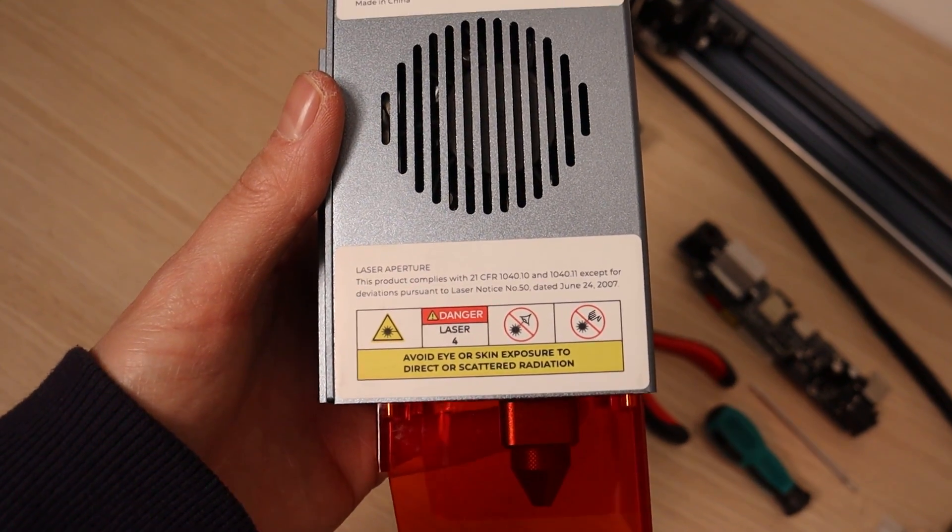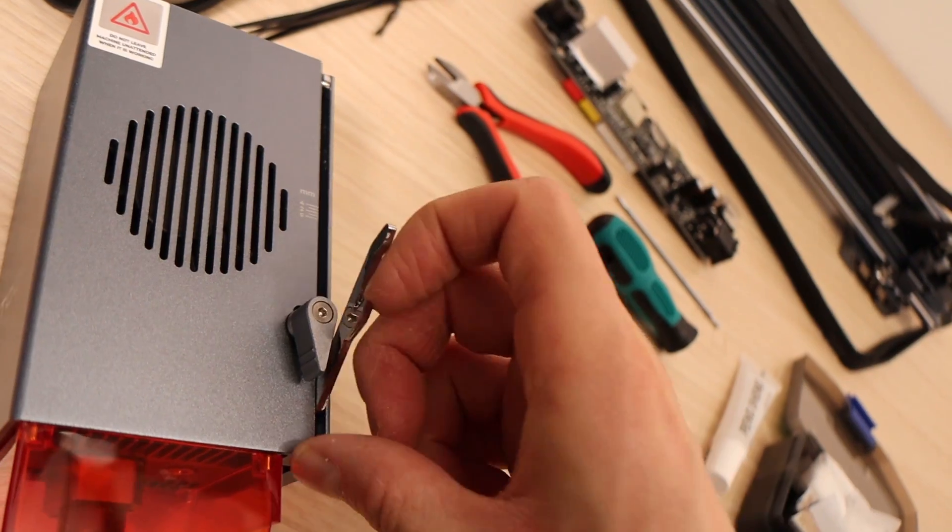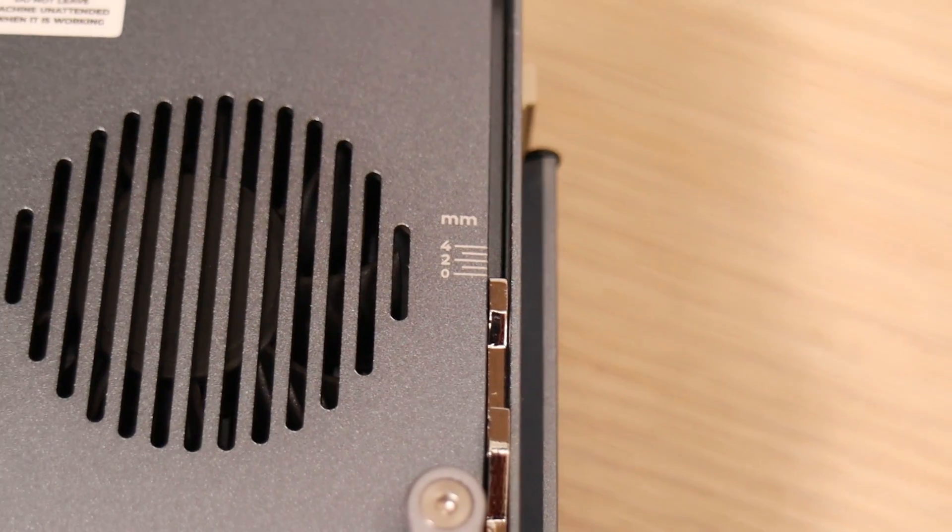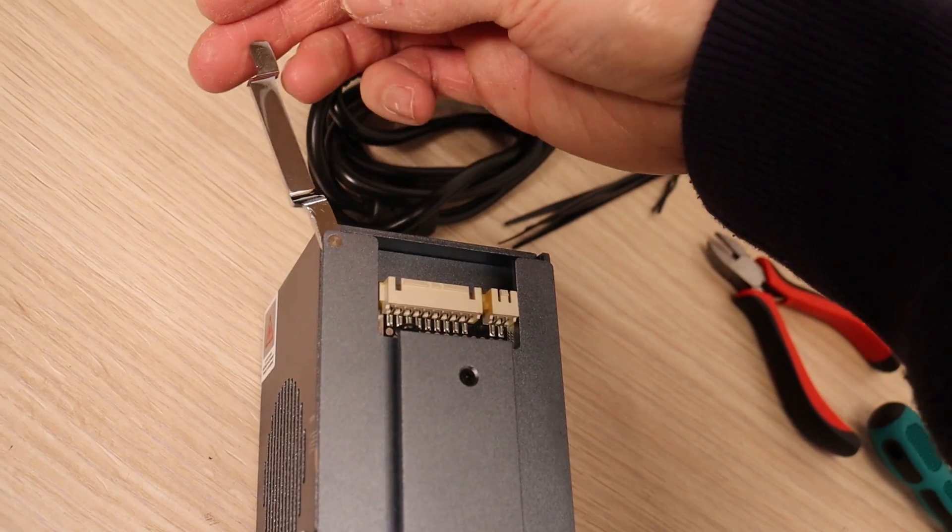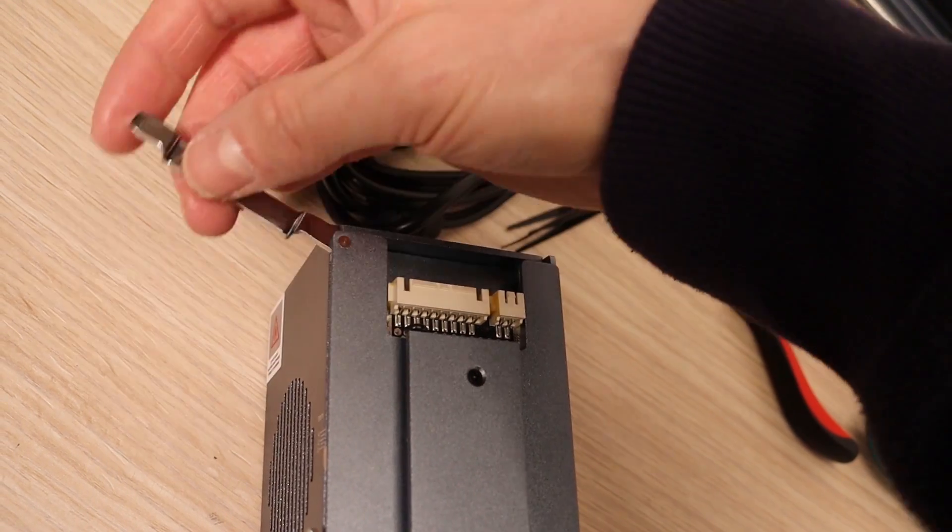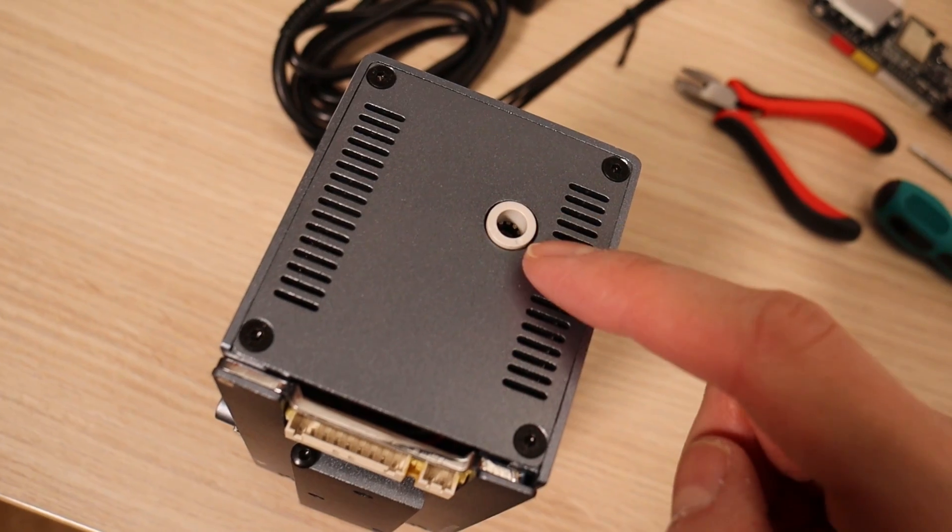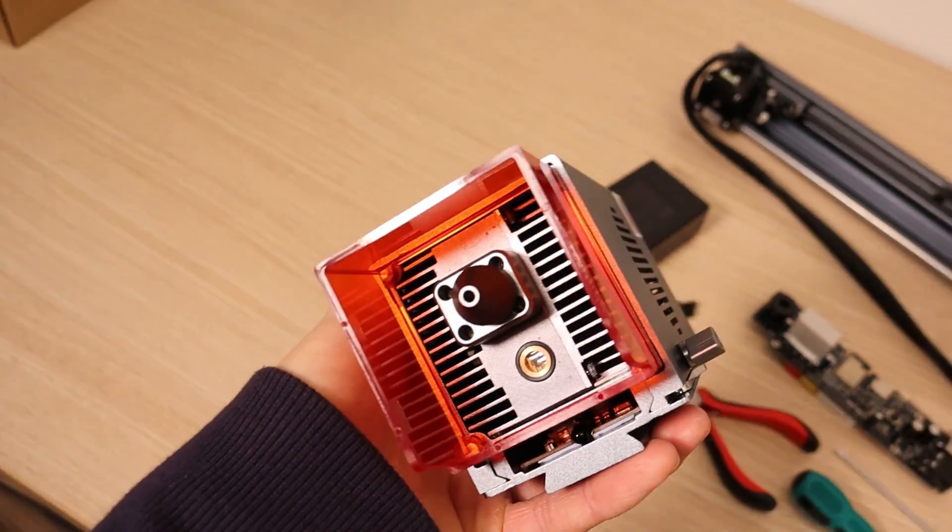This laser module is very large. It has a swiveling focusing lever which has a scale used for cutting depth compensation. It also has a lever for easy fixing of the interface cable when changing the module. It has a built-in air assist pipework for cleaner look and easier connection.